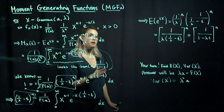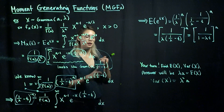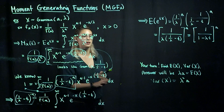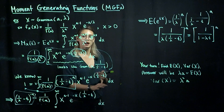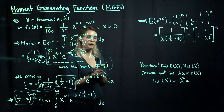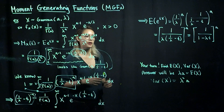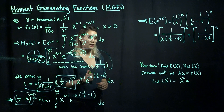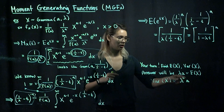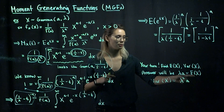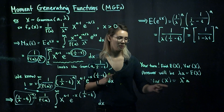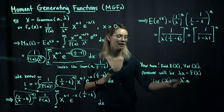Now you can take a first derivative and evaluate at 0 to find the expected value of a gamma distribution. Then take a second derivative, evaluate at 0, and use all that to find the variance. When you check your answer, the expected value should be equal to lambda times a, and the variance should be equal to lambda squared times a. Good luck.